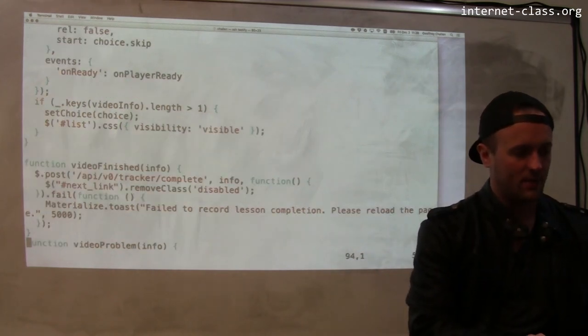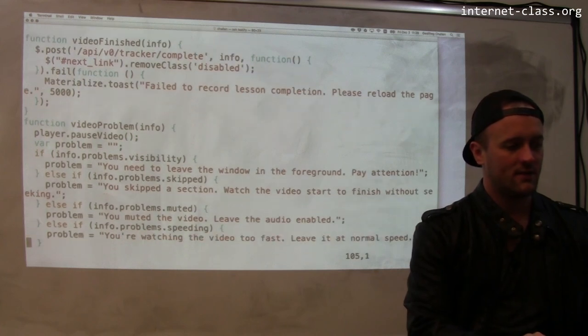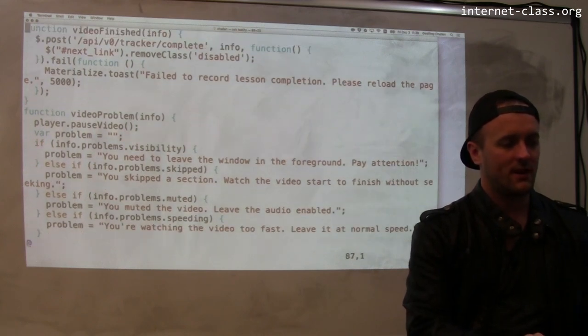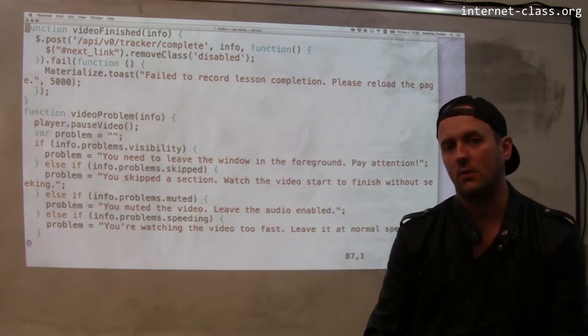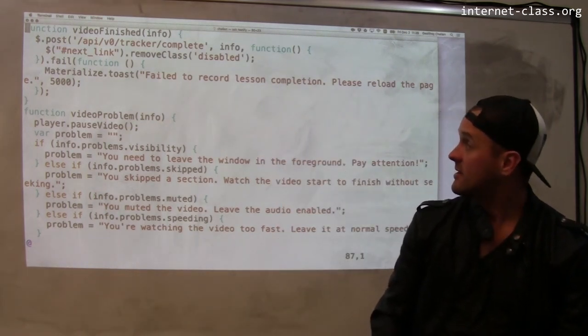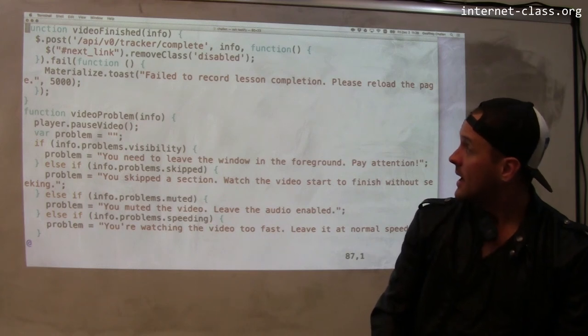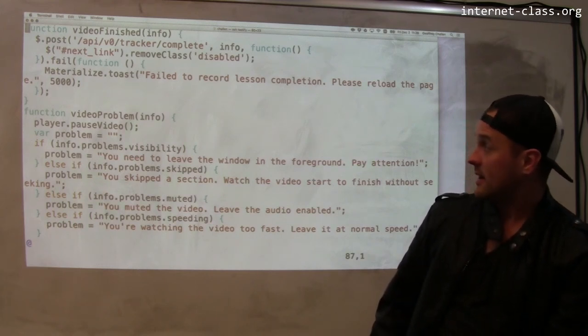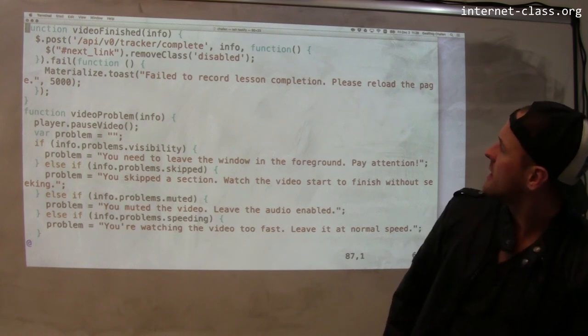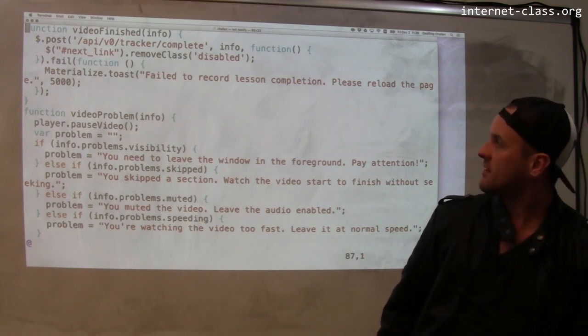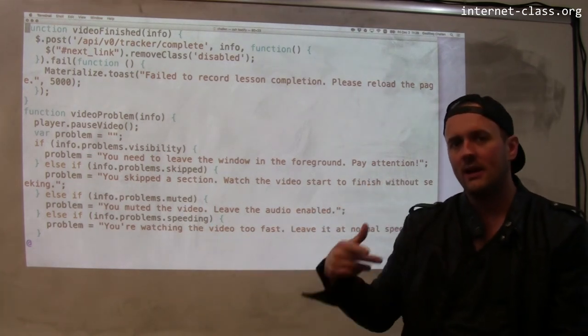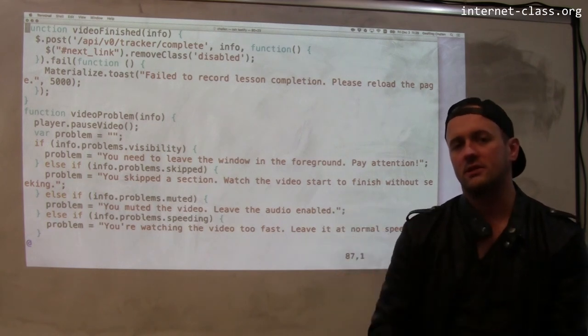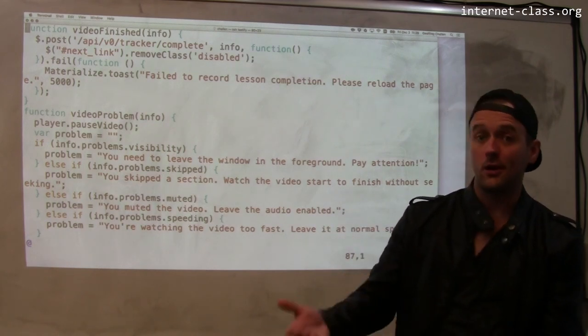If this doesn't happen, once you get to the end, and this is quite simple, all it does here is it generates a post to this particular API that the internetclass.org website supports. So essentially it says, okay, this is complete. And then it will, let's see, I think there is, okay, yeah. So it posts info. Info is a JSON blob. So essentially posts a little bit of information to this API. When that API is hit with information that's in the right format, it'll mark the video as complete and then you can go on.